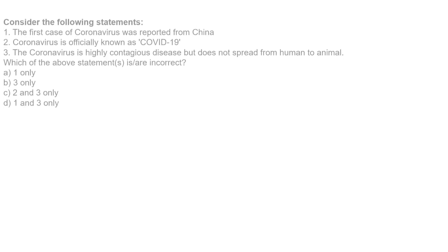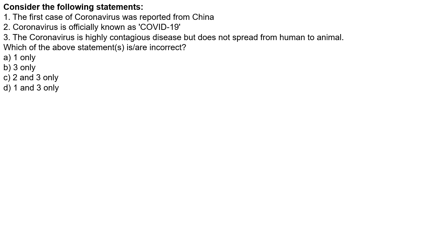The third question: Consider the following statements. Statement one: The first case of coronavirus was reported from China. Statement two: Coronavirus is officially known as COVID-19. Statement three: Coronavirus is a highly contagious disease but does not spread from humans to animals. Which of the statements is or are incorrect? Option A: First only; Option B: Third only; Option C: Second and Third only; Option D: First and Third only. Statements one and two are correct. Only statement three is incorrect regarding COVID-19. So the correct answer is Option B.